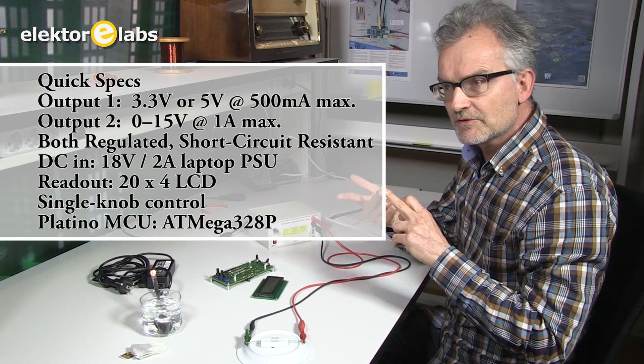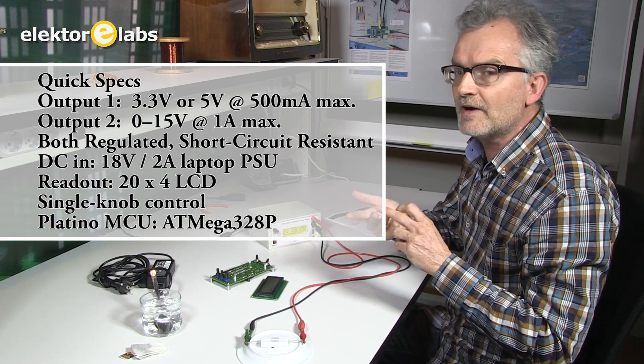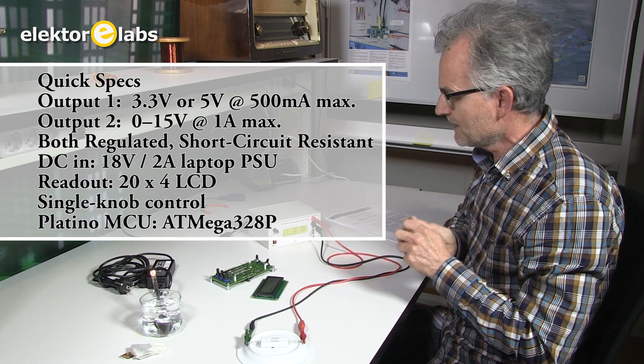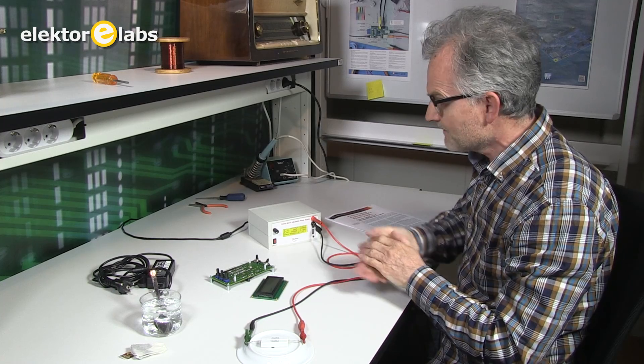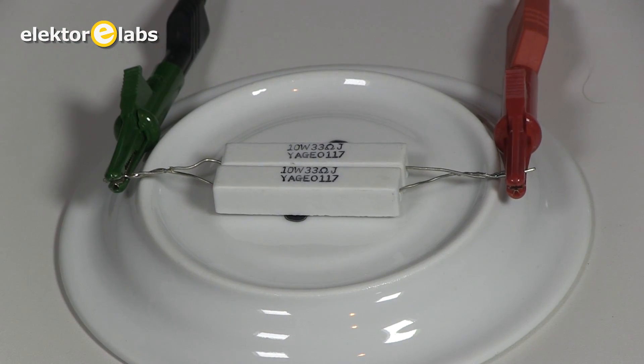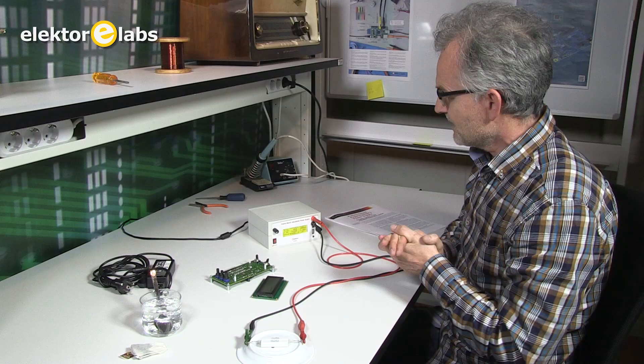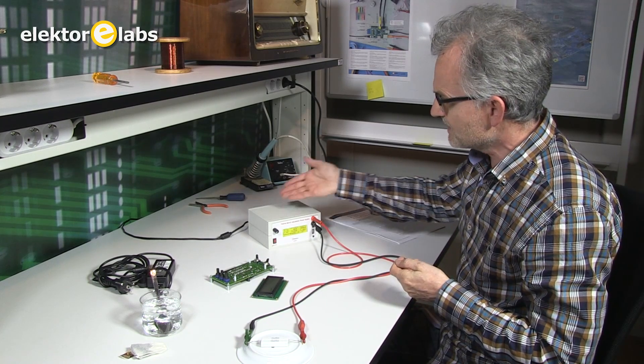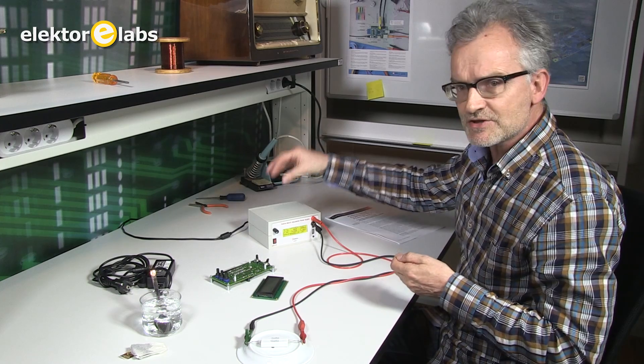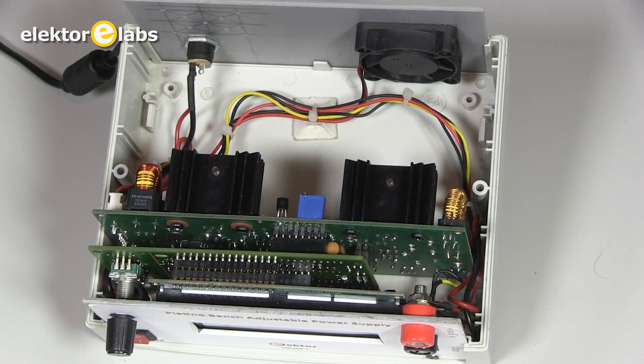This output delivers 3.3 volts or 5 volts at half an amp. I've got it connected up here right now, powering a couple of power resistors to see if it all works. The first thing you'll notice is that the unit is quite small, so it doesn't contain a mains transformer.